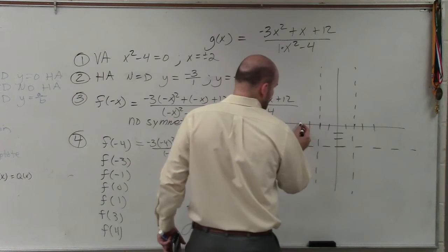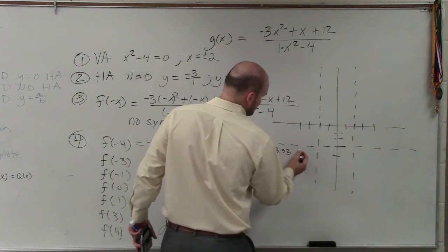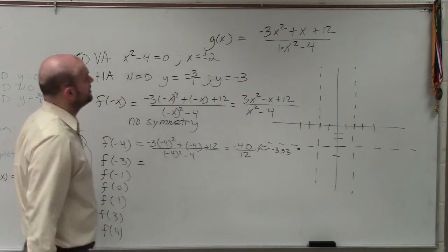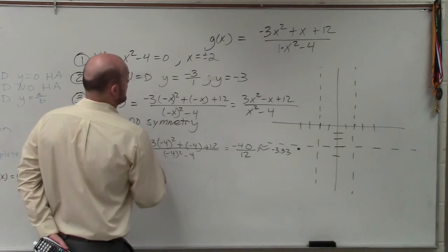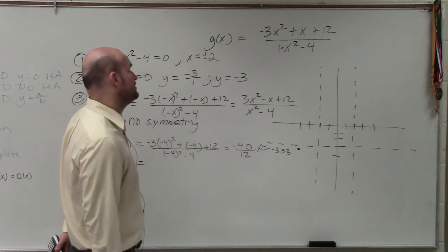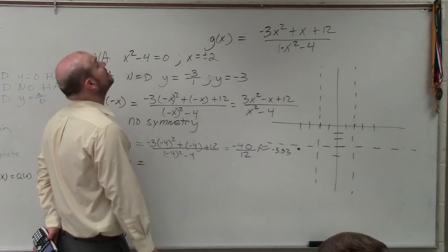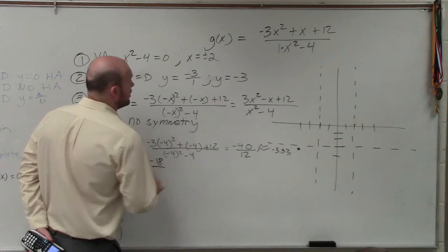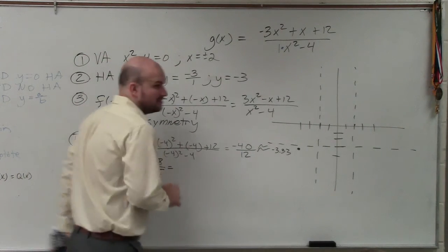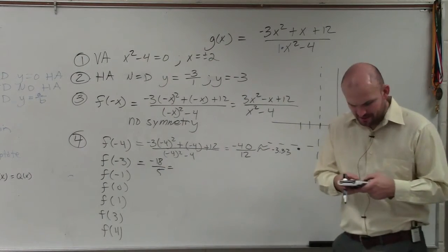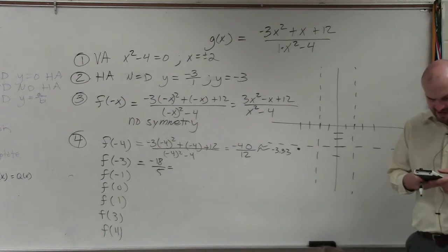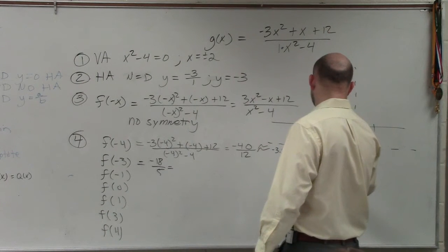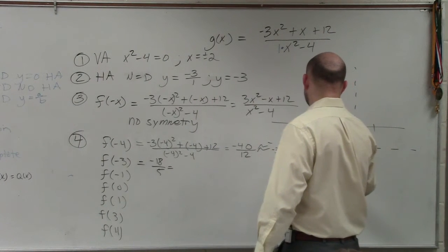So at negative 4, I'm at negative 3.33. Let's do negative 3. If I plug in negative 3, that's going to be 9. So that's going to be negative 27, negative 30. So that's going to be negative 18 over 5. Does everybody follow me? I'm doing my math in my head. Negative 18 divided by 5 is negative 3.6.